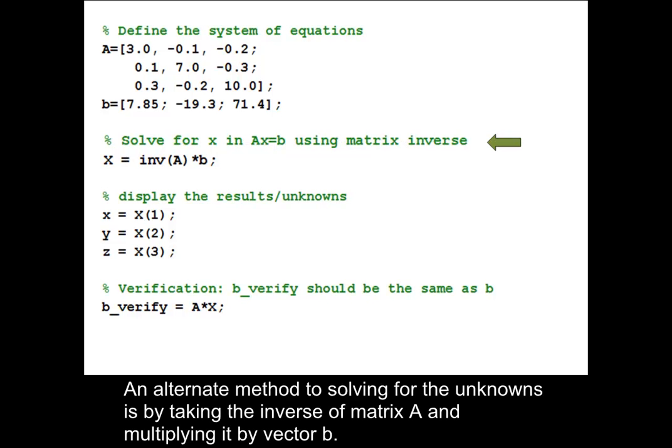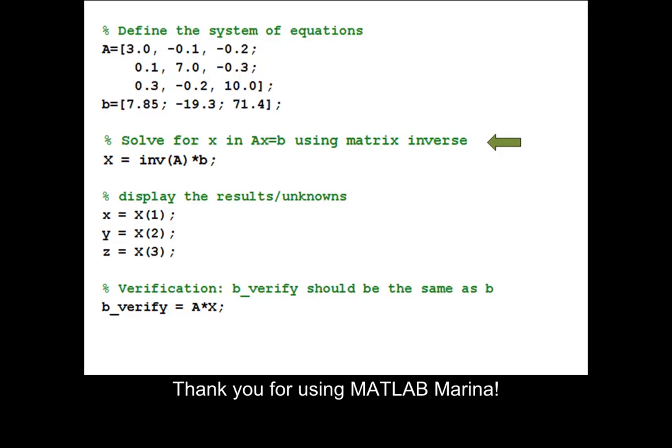An alternate method to solving for the unknowns is by taking the inverse of matrix A and multiplying it by vector B.